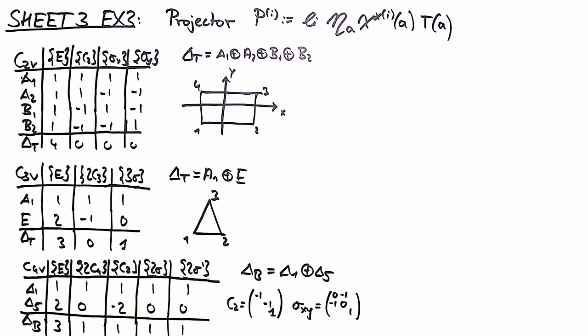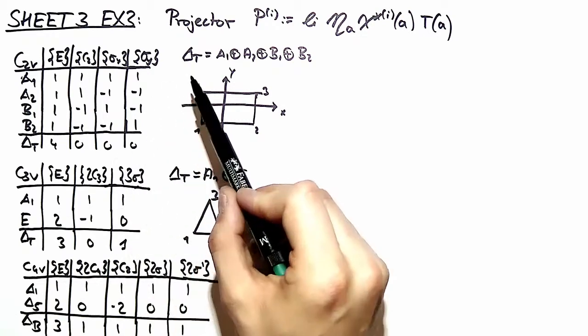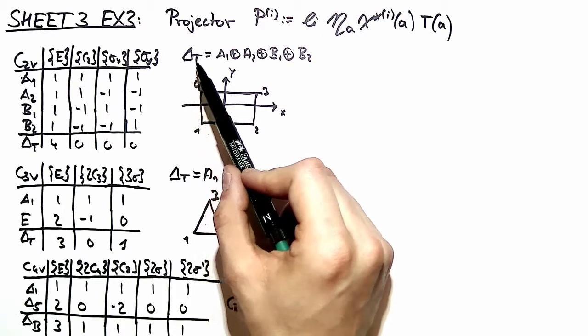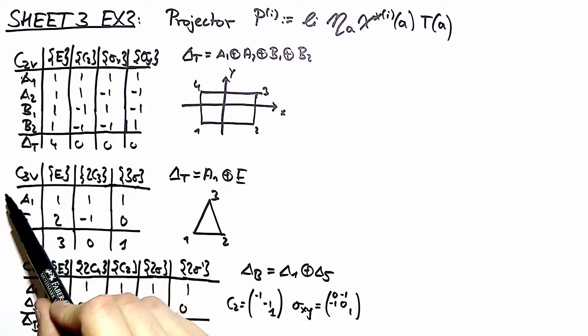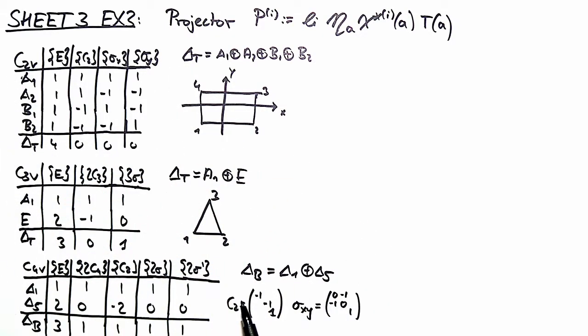Welcome back! My name is Thomas. In exercise number three of problem set number three, we want to practice how to construct symmetry-adapted vectors as a basis for representations. We want to find a basis for the tau representation of C2v and C3v, and we want to find a basis for the Bohr cube representation of C4v.